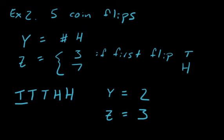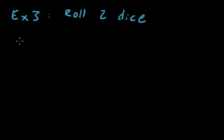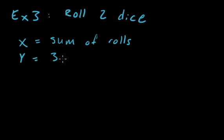We'll do one more example to solidify the idea. Example 3: you're going to be rolling 2 dice. x, the random variable, equals the sum of the rolls. And y is going to be another random variable - it's 3 times x.